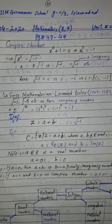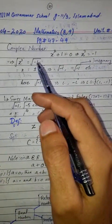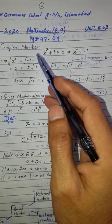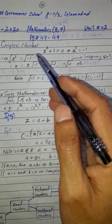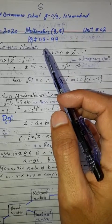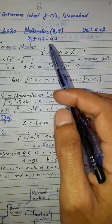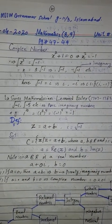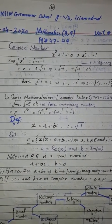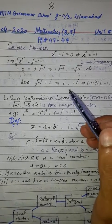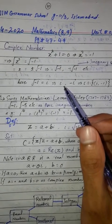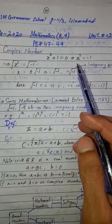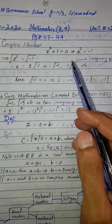Assalamu alaikum students, today we shall discuss complex numbers in detail. Recall that the square of a real number is non-negative. Real numbers can be negative or positive, rational or irrational.